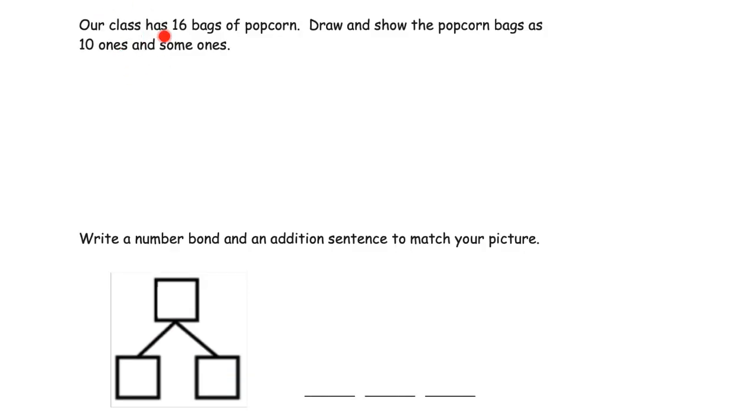This last slide is really just more of the same. It's just more practice for our kiddos. Our class has 16 bags of popcorn. In this case, we're starting with the whole. It says, draw and show the popcorn bags as 10 ones and some ones. So we want to see 10 ones plus the leftovers. In this case, there's going to be 6. So let's do it. I'm going to do that in a 10 frame.